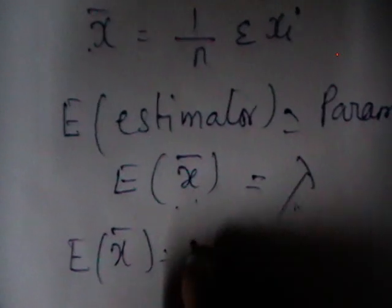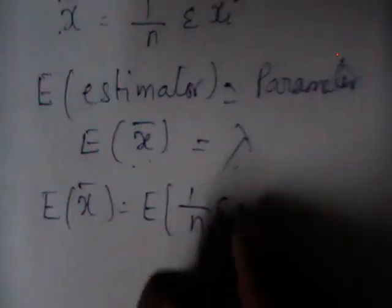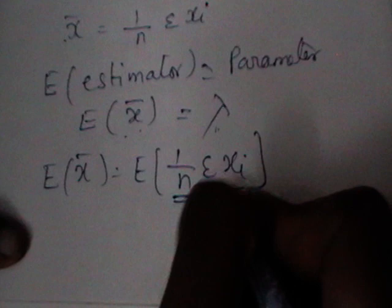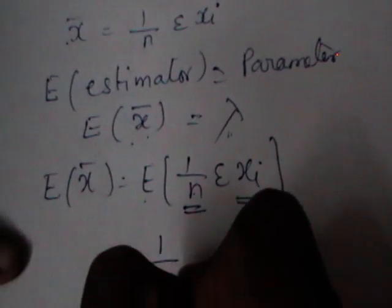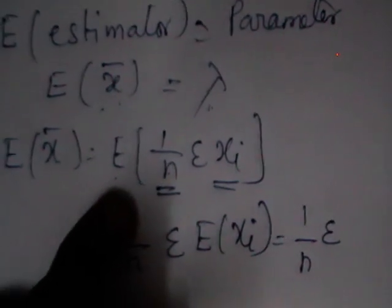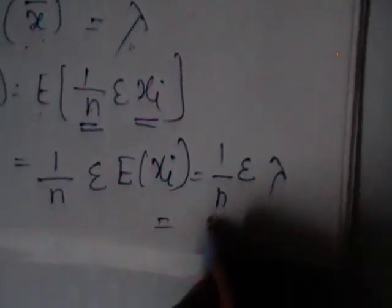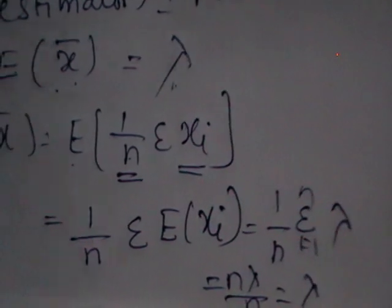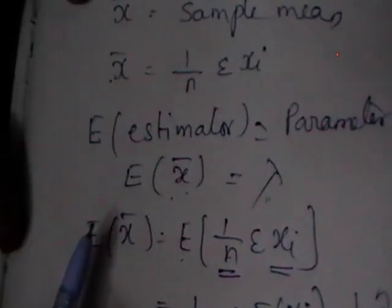E(X̄) = E(1/n Σ Xᵢ). Since 1/n is a constant, it can be taken outside the expectation: = (1/n) Σ E(Xᵢ). Since E(X) is the mean of Poisson distribution, which is λ, and this is independent of i, we get (1/n) × nλ = λ. Therefore, E(X̄) = λ, and we conclude that X̄, the sample mean, is an unbiased estimator of the population mean.